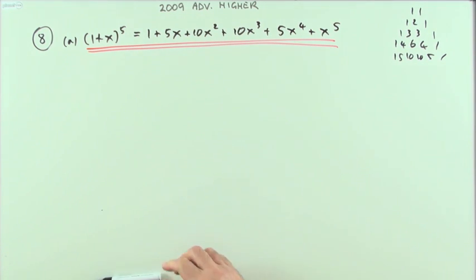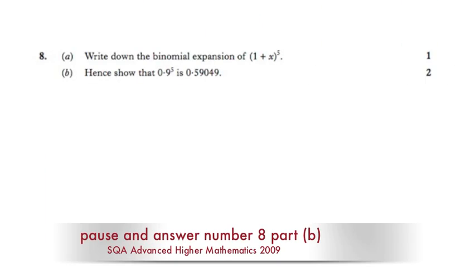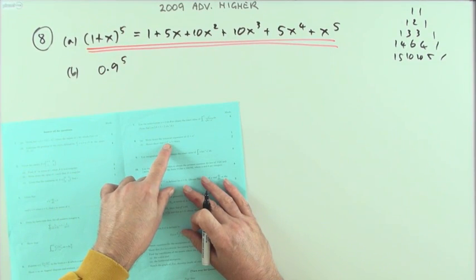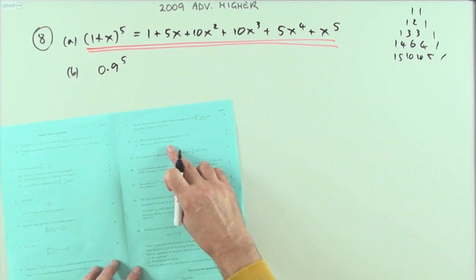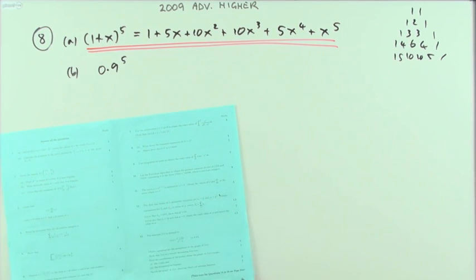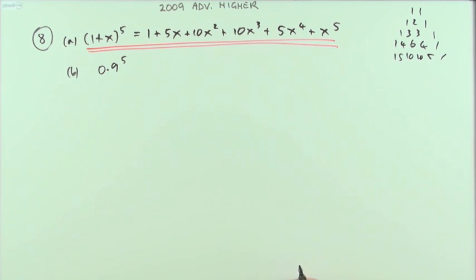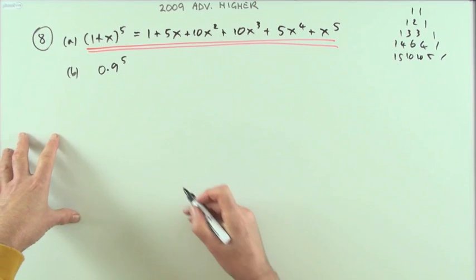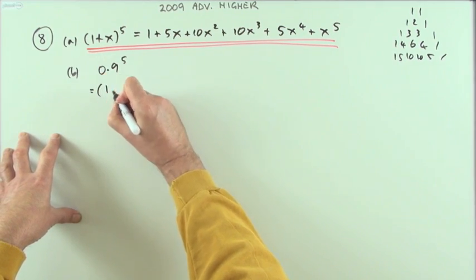I didn't need to bother with the ones in each of them because 1 to the power of anything was just 1. Part B: show that 0.9 to the power 5 is this decimal here with these five decimal places, 0.59049. Well, that means I'm going to want to be writing it as a binomial.